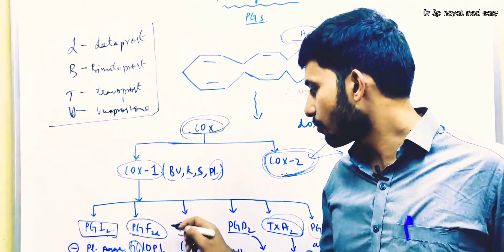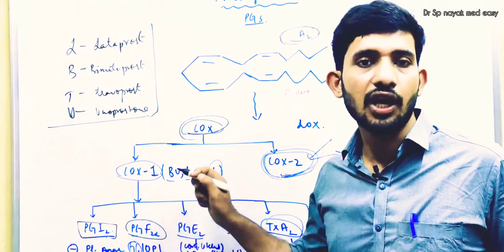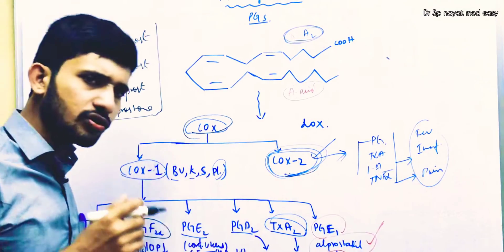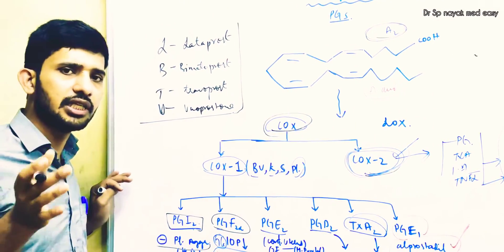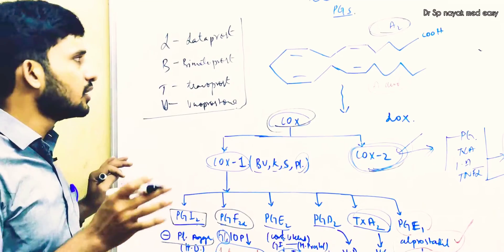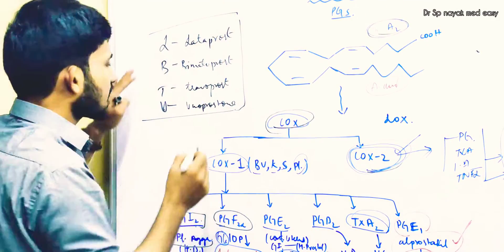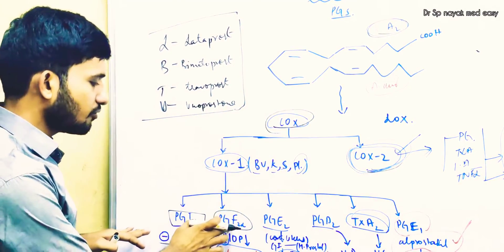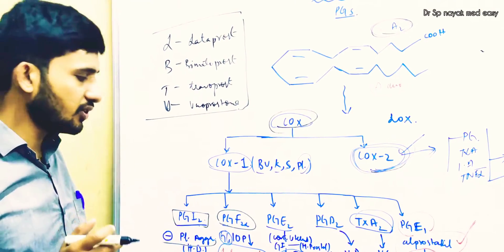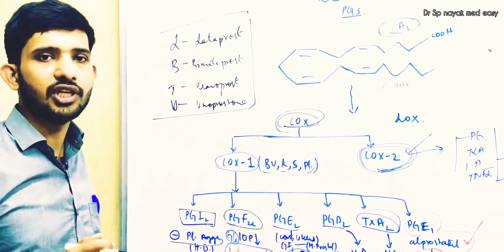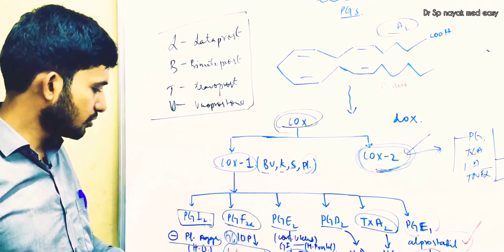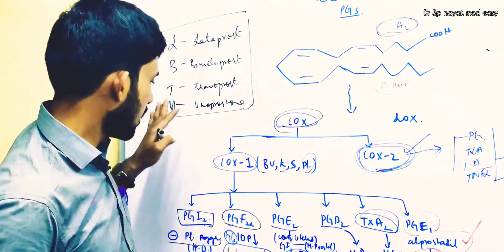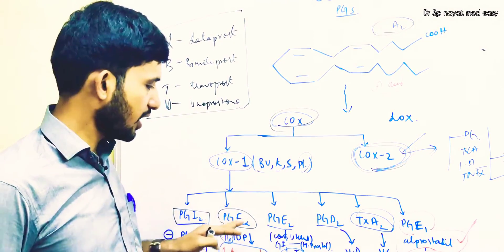In glaucoma, we also use some other sympathetic and parasympathetic drugs, but these prostaglandin F2 alpha analogues are specifically important. Prostaglandin F2 alpha is mainly associated with reduction of intraocular pressure, making it very important in clinical settings.